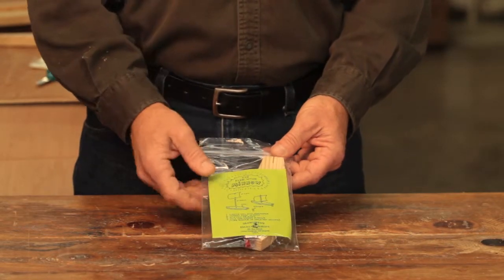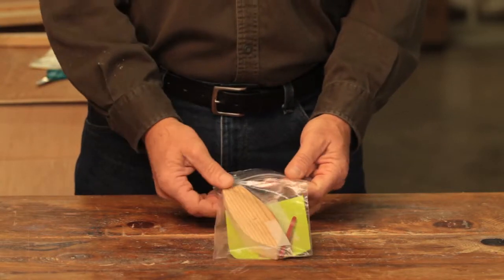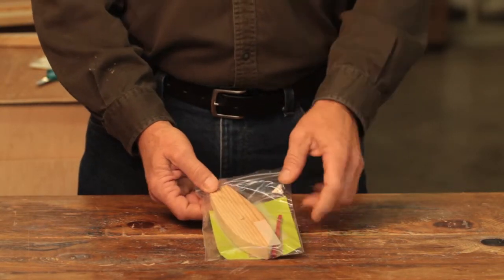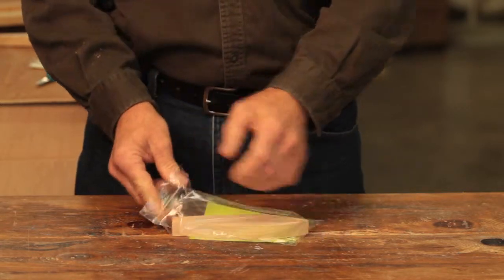It's a baggie with the instruction sheet and it also contains your hull, the rudder, the sail, the mast, and the sandpaper.